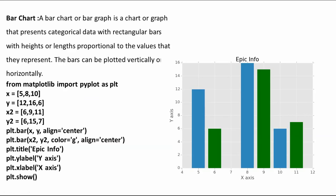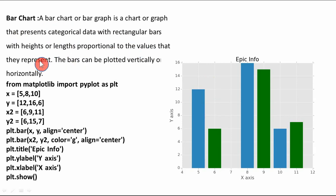Now the last topic in this video tutorial is the bar chart. A bar chart or bar graph represents categorical data with rectangular bars whose heights or lengths are proportional to the values they represent. The bars can be plotted vertically or horizontally. The first statement imports pyplot, but in a different way.